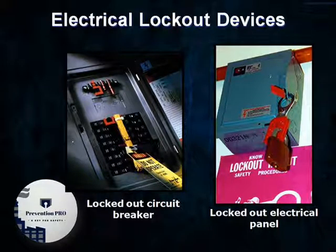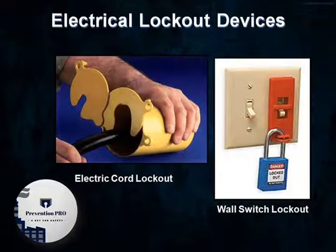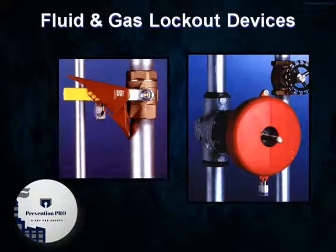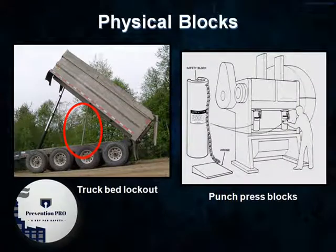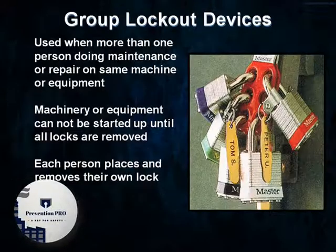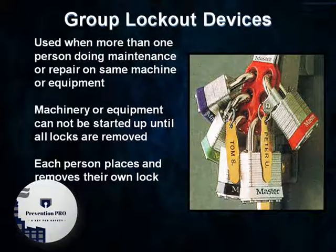Additional electrical lockout devices include electric cord lockout and wall switch lockout. Fluid and gas lockout devices include pipe lockout. Examples of physical blocks include truck bed lockout and punch press blocks.